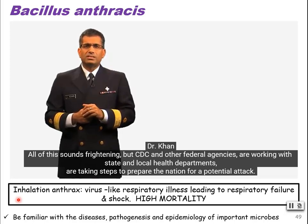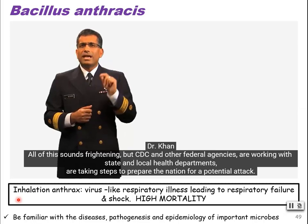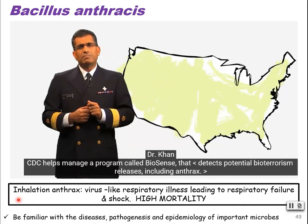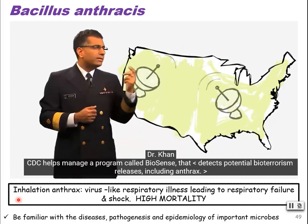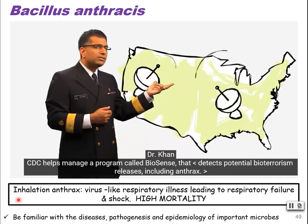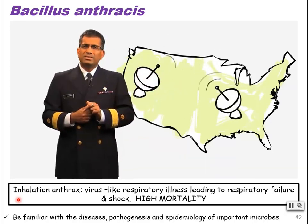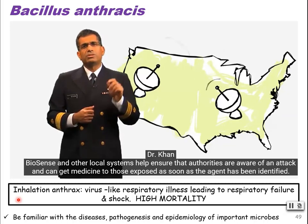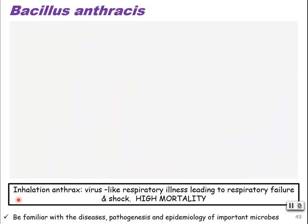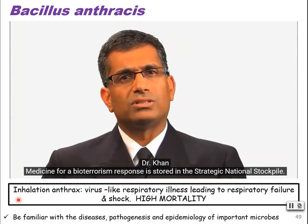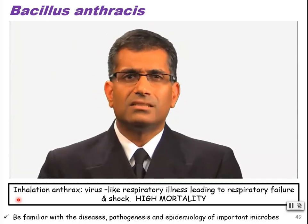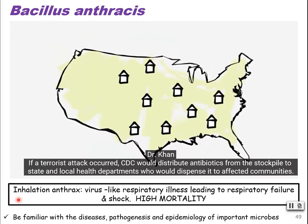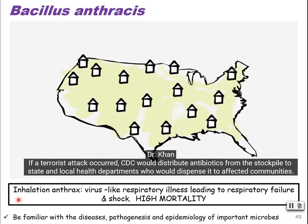CDC and other federal agencies are working with state and local health departments, taking steps to prepare the nation for a potential attack. CDC helps manage a program called BioSense, which detects potential bioterrorism releases, including anthrax in communities. BioSense and other local systems help ensure that authorities are aware of an attack and can get medicines to those exposed as soon as the agent has been identified. Medicine for a bioterrorism response is stored in the Strategic National Stockpile, or SNS. If a terrorist attack occurred, CDC would distribute antibiotics from the stockpile to state and local health departments to dispense to affected communities.